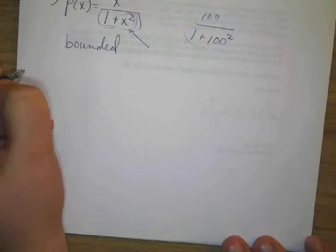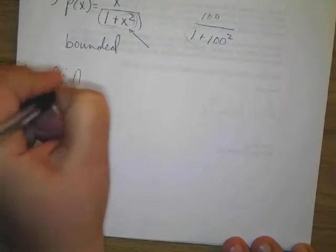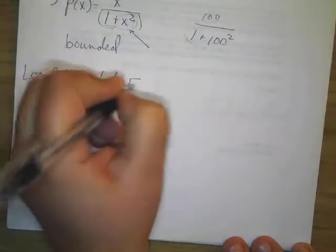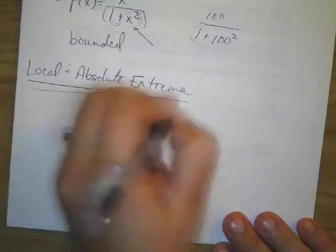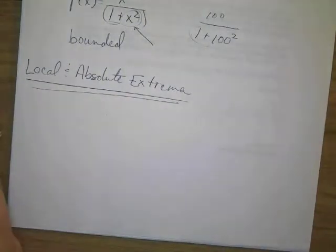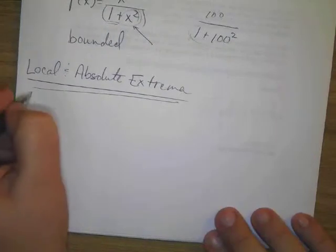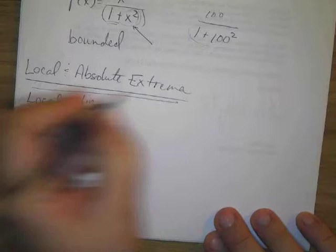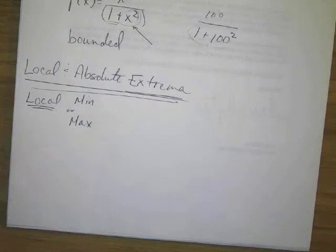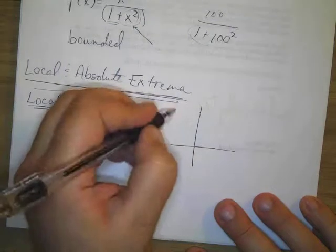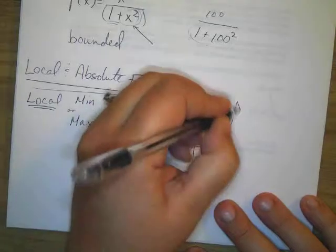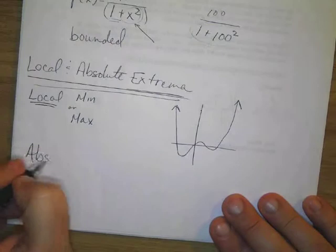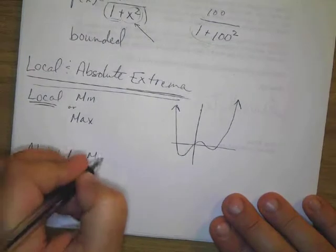The next thing we're going to talk about are local and absolute extrema. Don't make this harder than it has to be. For local, what we're talking about is a local minimum or a local maximum — that's what they mean by extrema. By extrema, they mean a minimum or a maximum, because that's the extreme you can go. And when they say local, they're talking about something like this — let me draw a picture. We have local min or max, or we have absolute min or max.